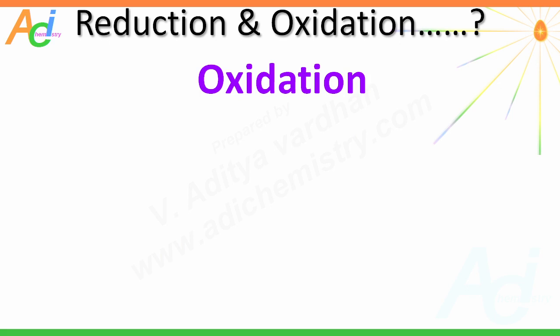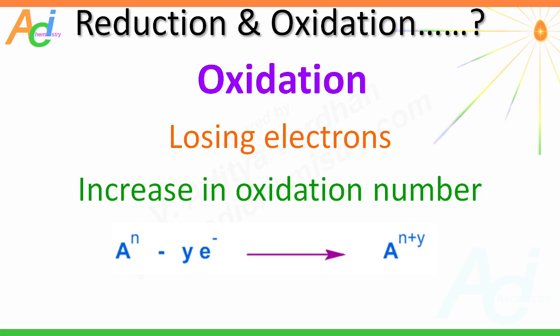Whereas oxidation is a half reaction involving losing of electrons that results in an increase in the oxidation number. And this is an example of an oxidation half reaction. Here, the oxidation number of atom A is increased from N to N plus Y when Y number of electrons are removed. It actually indicates a decrease in the negative charge, or you can say an increase in the positive value.